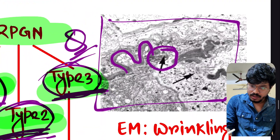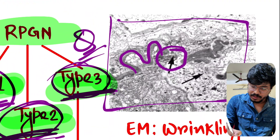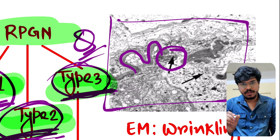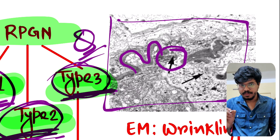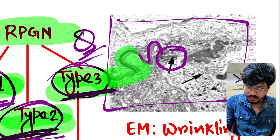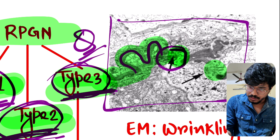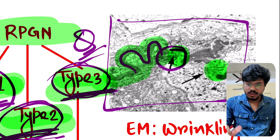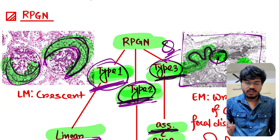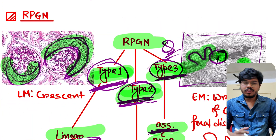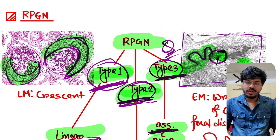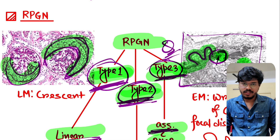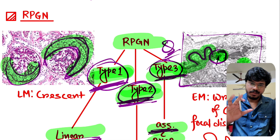On light microscopy, crescents are visible. On electron microscopy, there is wrinkling and disruption of the GBM — glomerular basement membrane. This topic is very important; revise it frequently.